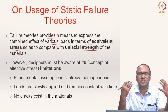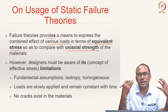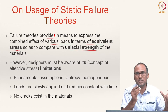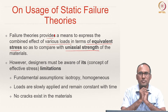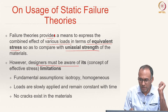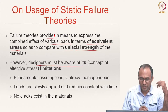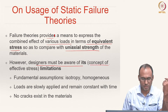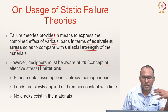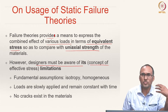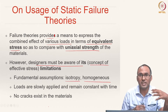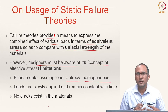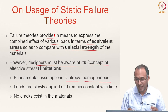In the case of von Mises stress, what we have done is calculate an equivalent one-dimensional stress from the complex 3D state of stress and then compare that with the uniaxial tensile strength to say whether it is failing or not. However, designers must be aware of its limitations. The concept of effective stress has certain fundamental assumptions — we assumed the material to be isotropic and homogeneous. But real materials are actually not perfectly isotropic and homogeneous, though the underlying failure theory has these assumptions.